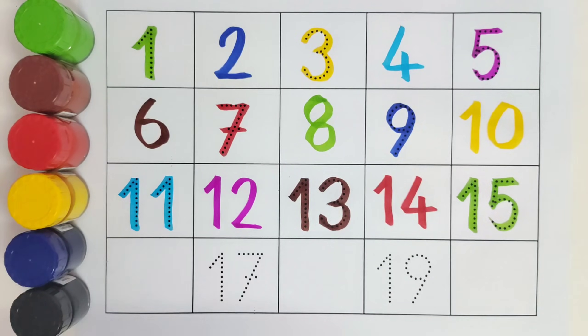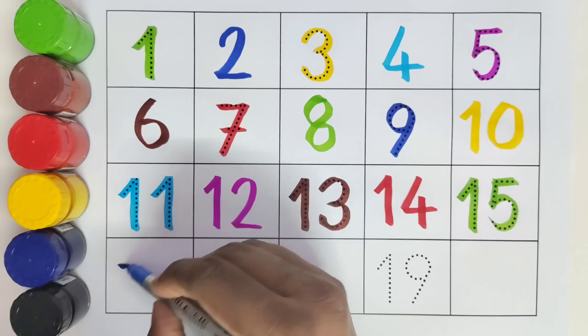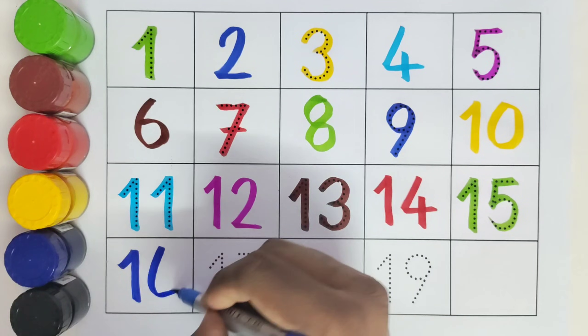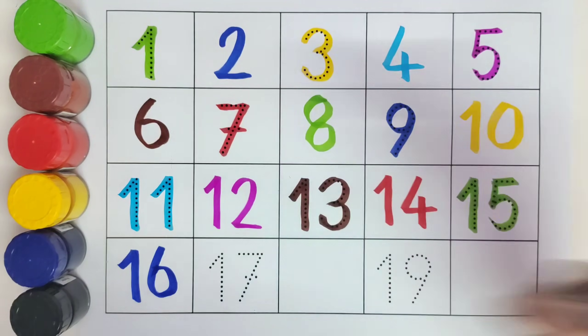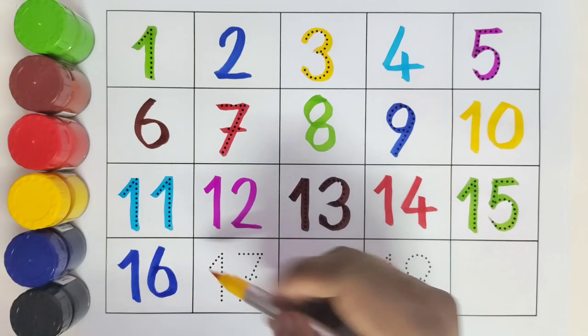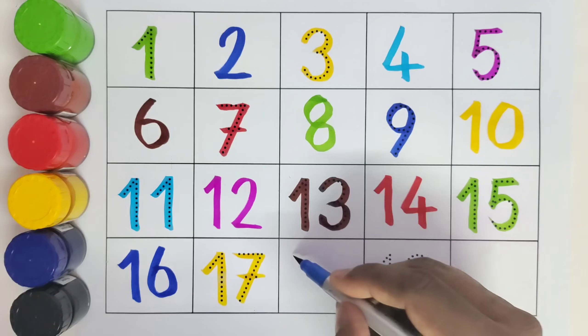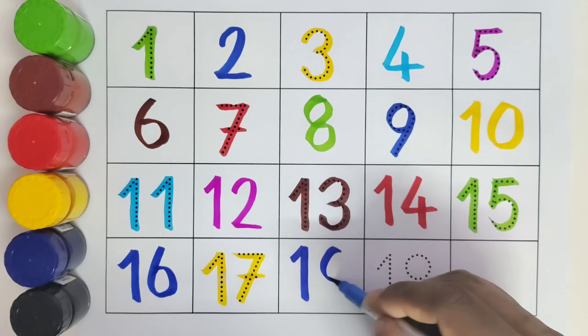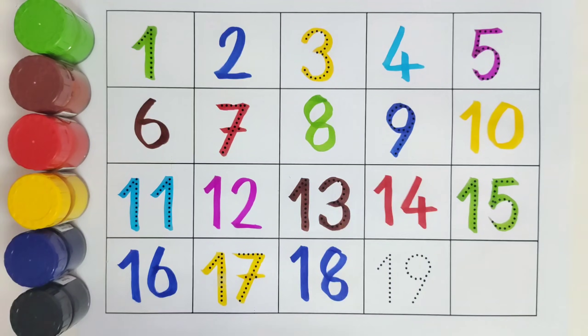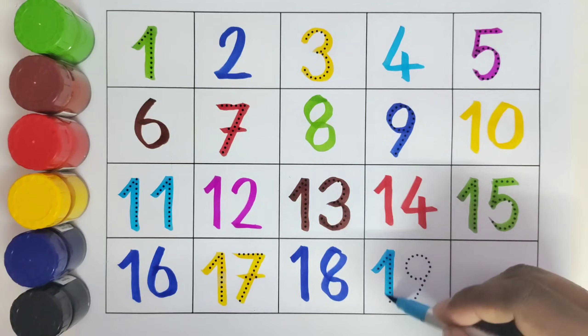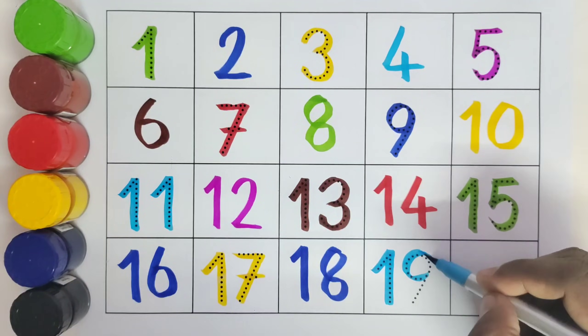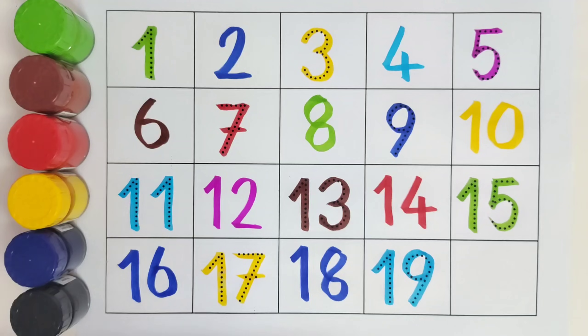What comes after 15? 16. Number 16. This is 17. Number 17. What comes after 17? 18. Number 18. 19. This is 19. Number 19. What comes after 19? 20. Number 20.